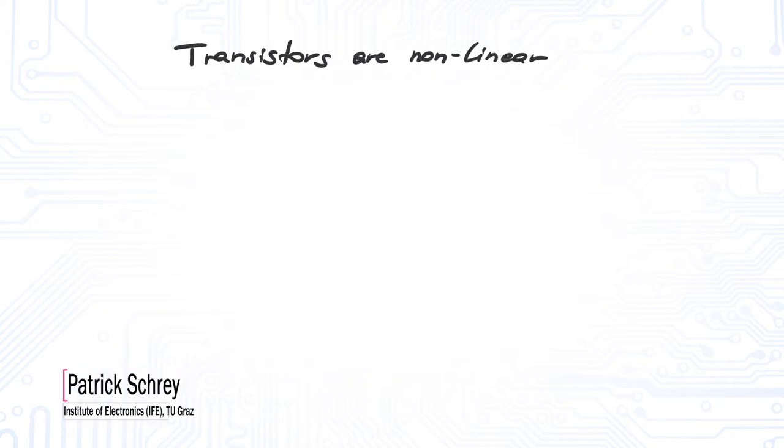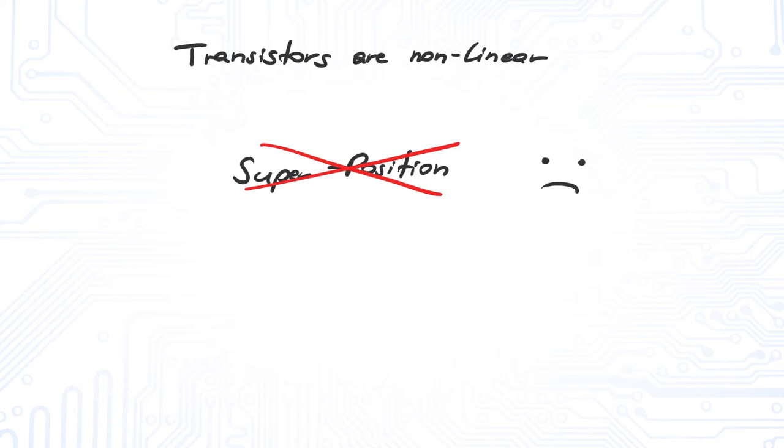Transistors are non-linear components. This prevents us from applying our usual tools for circuit analysis, like the superposition principle. If we still want to use them, we have to linearize the transistor.